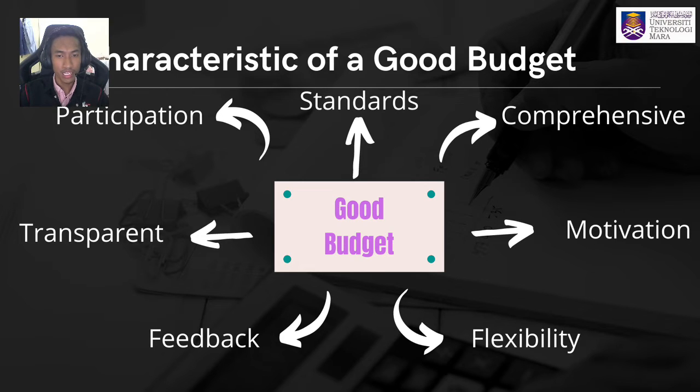Transparency is a crucial attribute to distinguish whether the budget is good or not. Fulfillment of top-down approach and bottom-up approach are the best ways to achieve this, serving as feedback and sentiment. Flexibility in planning of good budgeting is a must to cater for all eventualities and future possibilities.